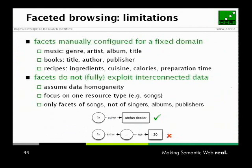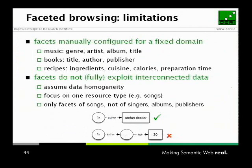Every time you find a new domain, you have to manually create the interface. The second problem is that data is usually interconnected — it's a graph — but faceted browsing like in iTunes doesn't really exploit this. It focuses on homogeneous data like songs — one type of resource — and shows facets only of those songs. You cannot search in iTunes for all songs written by a UK artist because it doesn't know the artists are from the UK. Even if that data were available, iTunes doesn't let you make joint constraints, like filtering on all things written by somebody who is 30. The interconnectedness of the data is not reflected in the user interface.